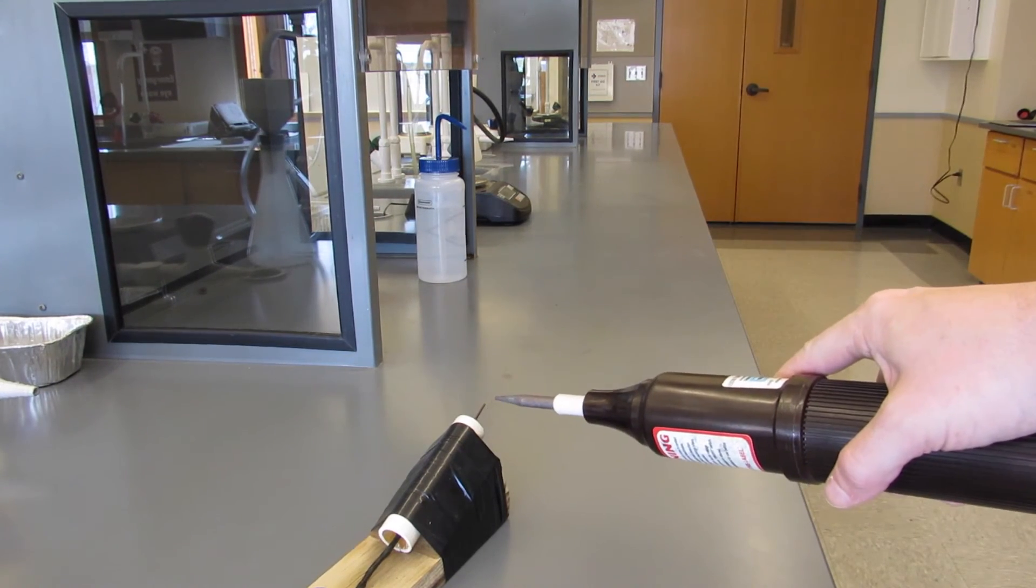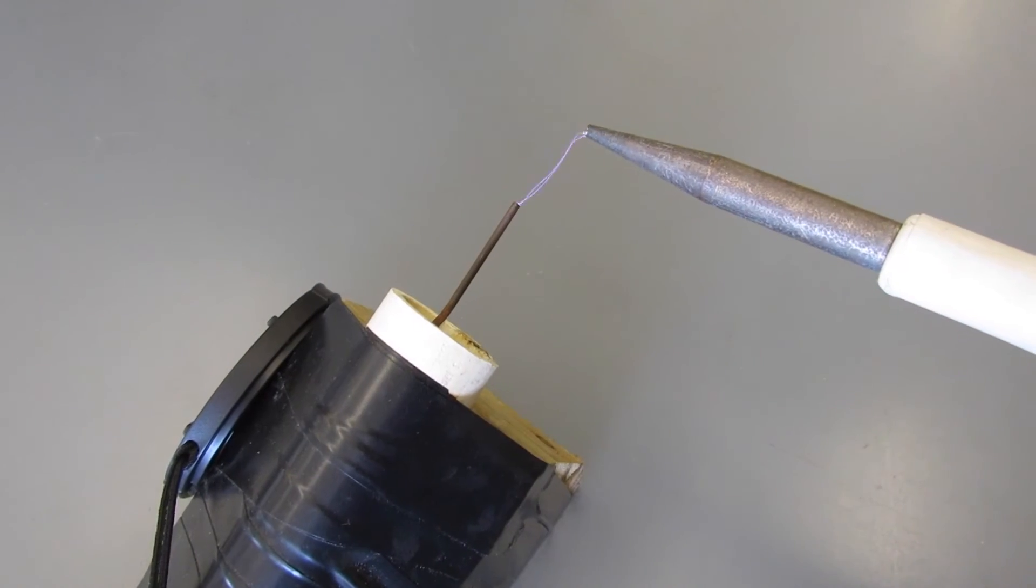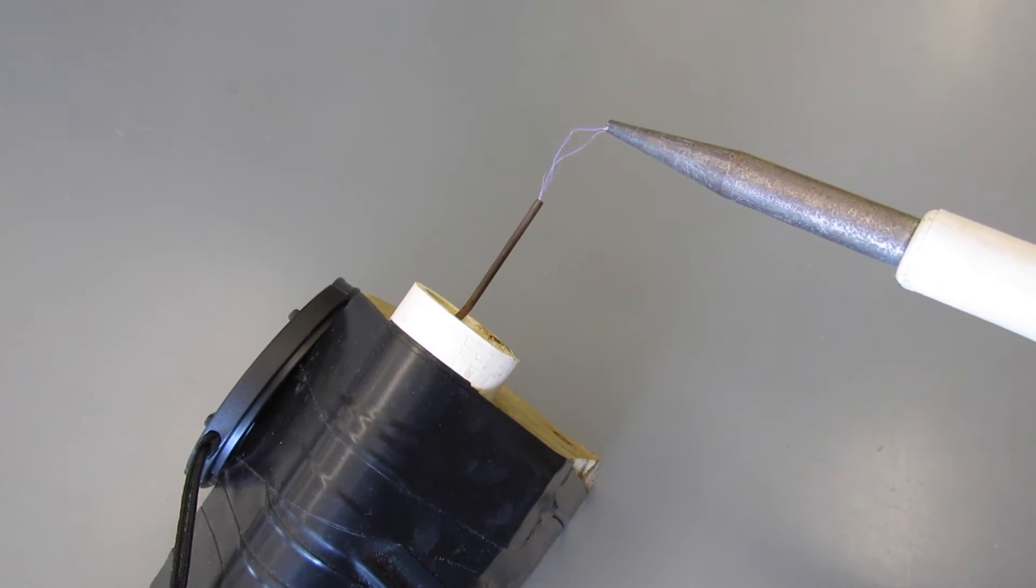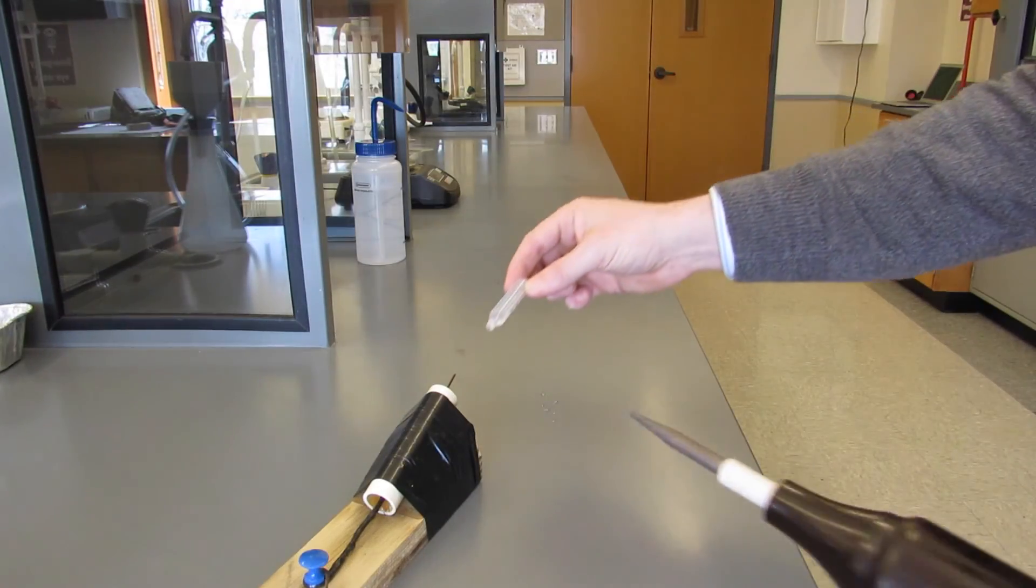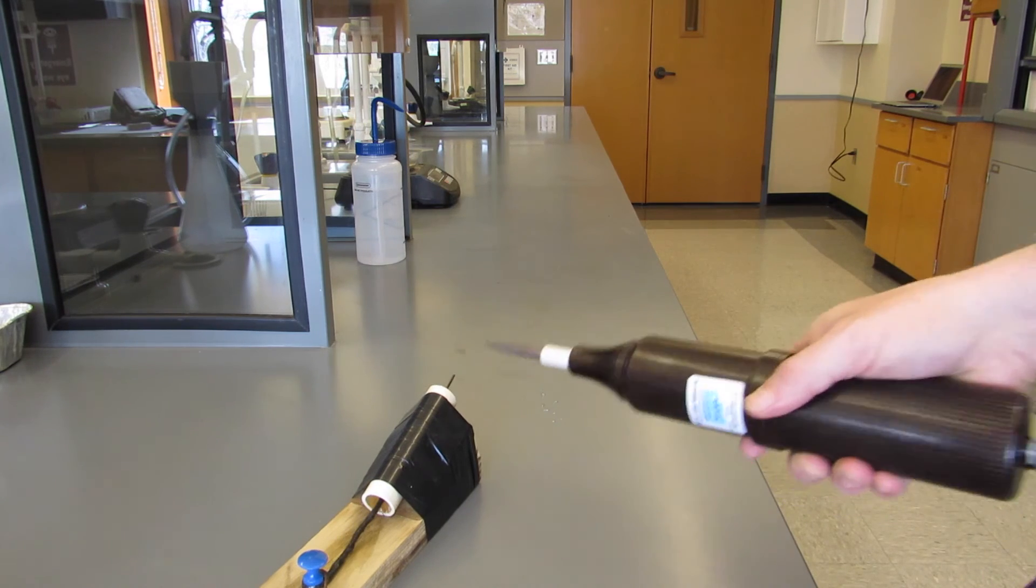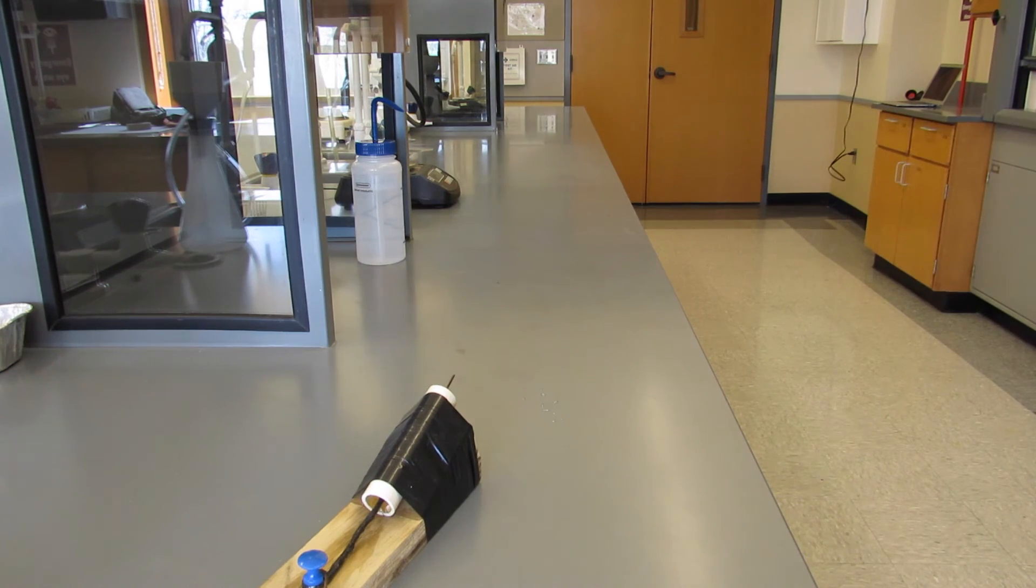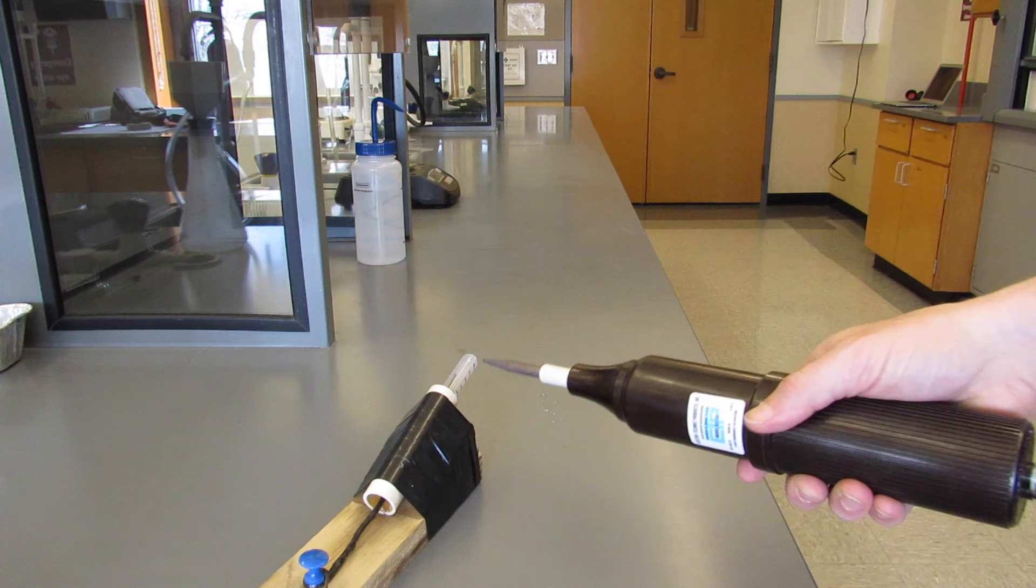You can also use a stationary launcher which we built with just a coat hanger and you use a piezoelectric device or Tesla coil to ignite the rocket. You fill them up the same way, slide your rocket on and then off it goes. Here we have a super slow motion launch for you.